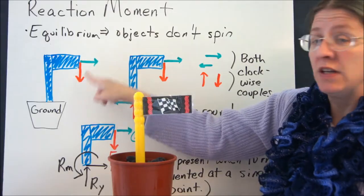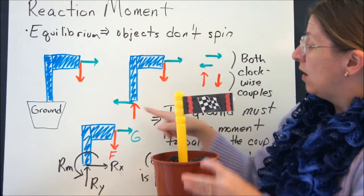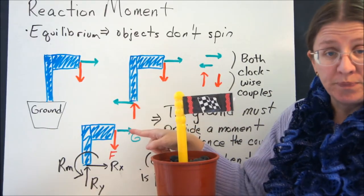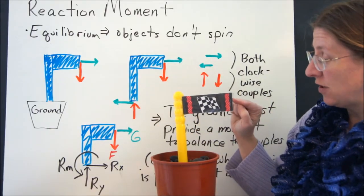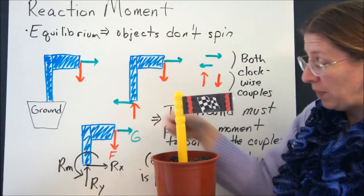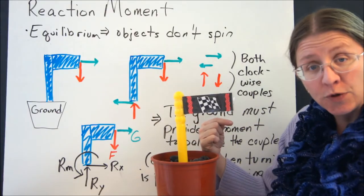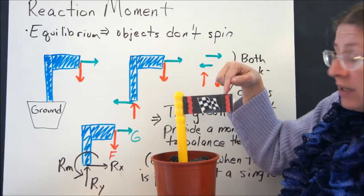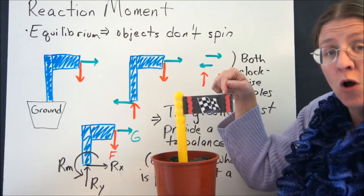So even if I have either of these two forces, the ground is able to counter them, even at a distance. Even if I push here on this flag, it doesn't just go over because the ground can keep it from doing that. If I push down here, the ground keeps it from going down.